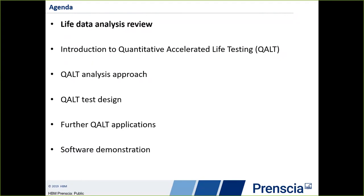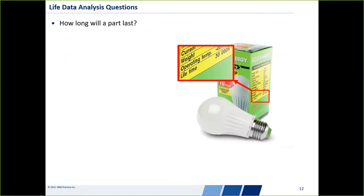Life data analysis tries to answer a number of questions, but at the simplest level: how long is that part going to last? If you buy a light bulb, you'll see on the box a lifetime of 30,000 hours. So we have a number that says how long that's going to last. Whether that's the best method, we'll see in a bit, but there may be other questions we want to answer about a product as well.